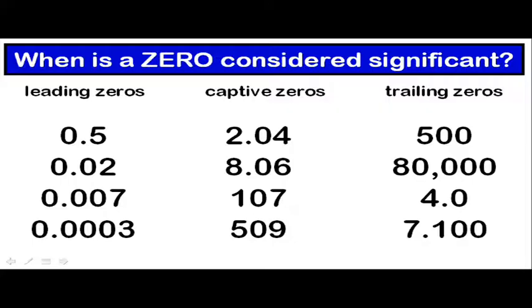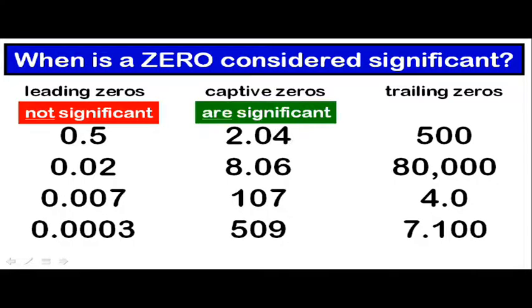According to the rules for significant figures, leading zeros are not significant. So all of the measurements in the first column would have exactly one sig fig, because these leading zeros do not count. Captive zeros are considered to be significant. All of the measurements in the middle column have exactly three sig figs.